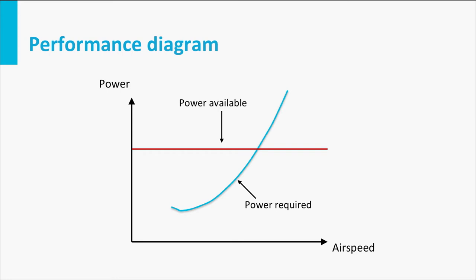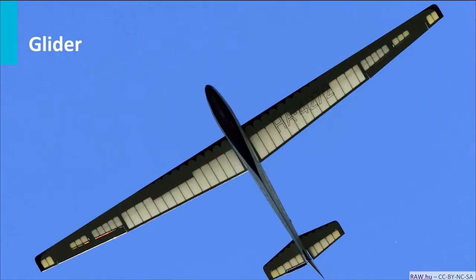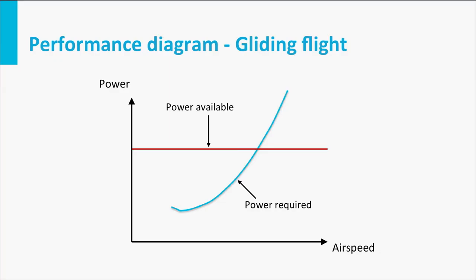Now imagine that we have an aircraft without engine thrust, a glider. This aircraft has zero thrust at all flight speeds and also zero power available at all flight speeds. So if we go back to the performance diagram, the maximum power curve is in fact a straight line, just like the idealized propeller engine, but now on top of the x-axis.